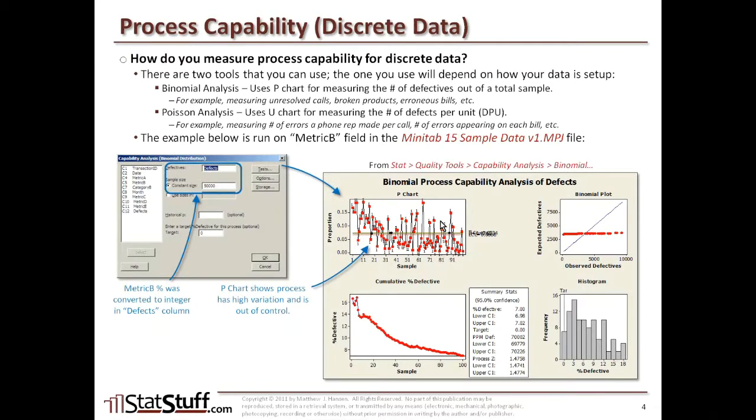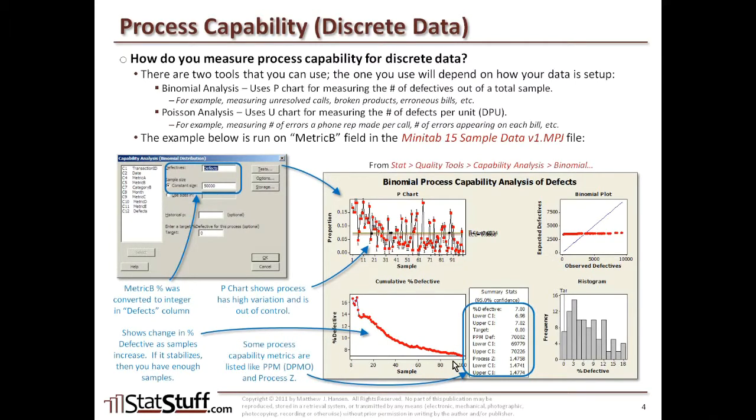Based on this data as the output, first we would see here's the p-chart that's used for this binomial analysis. This p-chart would show there's a lot of variation, and the process appears to be out of control. From a visual standpoint, we can see a lot of these items where they're outside of the control limit. So it looks like it's very much out of control. We can look at this lower left chart as a way for us to see the percent defective as samples increase. If we see that it stabilizes over time over the more samples that we get, then we can conclude that we have enough samples. However, if it doesn't seem to stabilize over time, then chances are we might need to get more samples to run. And then we see in this output this section here, which includes some of the same process capability metrics we've looked at before, such as the parts per million, as well as the process Z. We would use and interpret this information the same way we've looked at before for the process capability for continuous values. Now when we have discrete type of data, we can use this to assess the capability of our process.